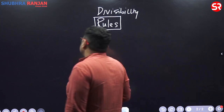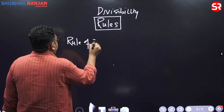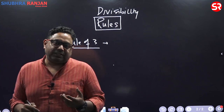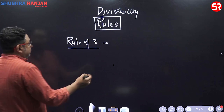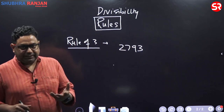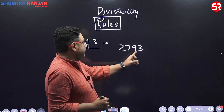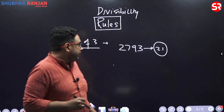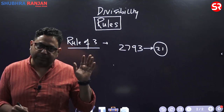First, let's take the rule of 3. What is the divisibility rule of 3? Everyone knows it — the sum of the digits of a number must be exactly divisible by 3. For example, is 2793 exactly divisible by 3? We calculate: 2+7=9, 9+9=18, 18+3=21. Since 21 is a multiple of 3, 2793 is exactly divisible by 3.